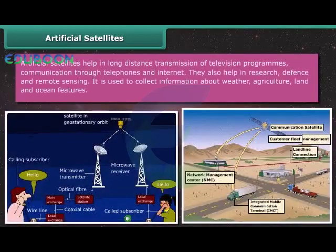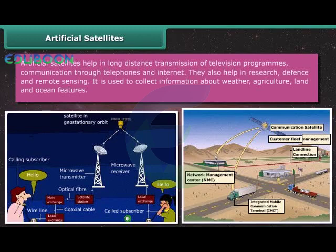Artificial satellites help in long-distance transmission of television programs, communication through telephones and internet. They also help in research, defense and remote sensing. It is used to collect information about weather, agriculture, land and ocean features.